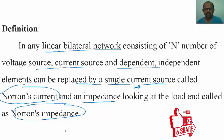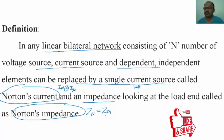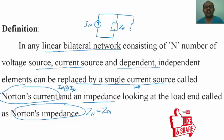In the case of Thevenin's, you replace by a single voltage source called Thevenin's voltage or open circuit voltage, and the impedance is called Thevenin's impedance. In Norton's, you replace by a single current source called Norton's current or short circuit current, and an impedance called Norton's impedance. Note that Thevenin's impedance equals Norton's impedance. The Norton equivalent has a current source IN in parallel with Norton's impedance ZN.